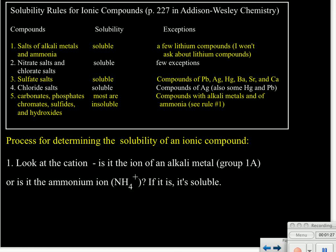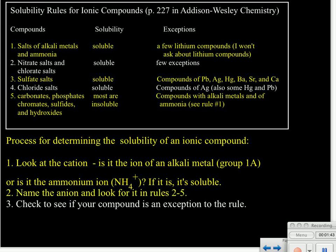If that first ion is not an alkali metal or an ammonium ion, then you have to look at the anion — the second ion in the compound. You'll look for it in rules two through five and see whether it's soluble or insoluble. The third step is just to check whether your compound is an exception to the rule.